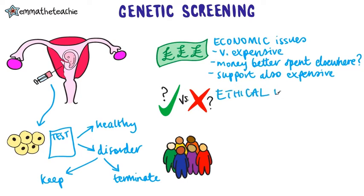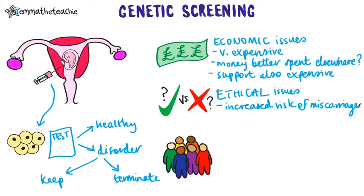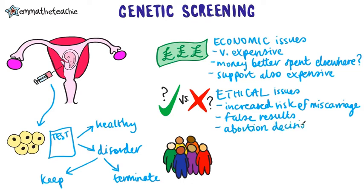Now we'll look at the ethical issues. Collecting cells from an embryo can increase the risk of a miscarriage, whether or not the baby has the disorder. And occasionally the test can give a false positive, saying the baby has a disorder when it hasn't. It can also be a false negative, saying the baby doesn't have the disorder, but when it is born, it does. And of course, once a couple has the screening done, they face their own ethical decisions on whether or not to have an abortion.